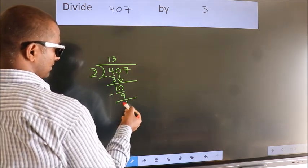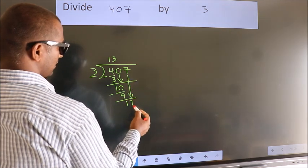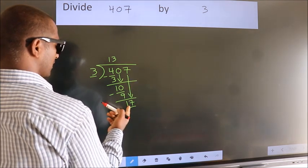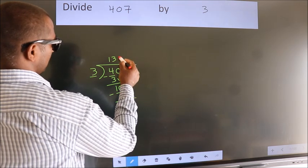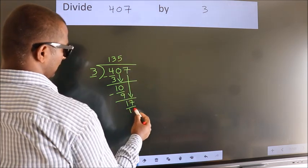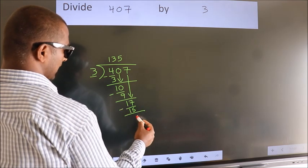After this, bring down the beside number. So, 7 down. So, 17. A number close to 17 in 3 table is 3 5s 15. Now, we subtract. We get 2.